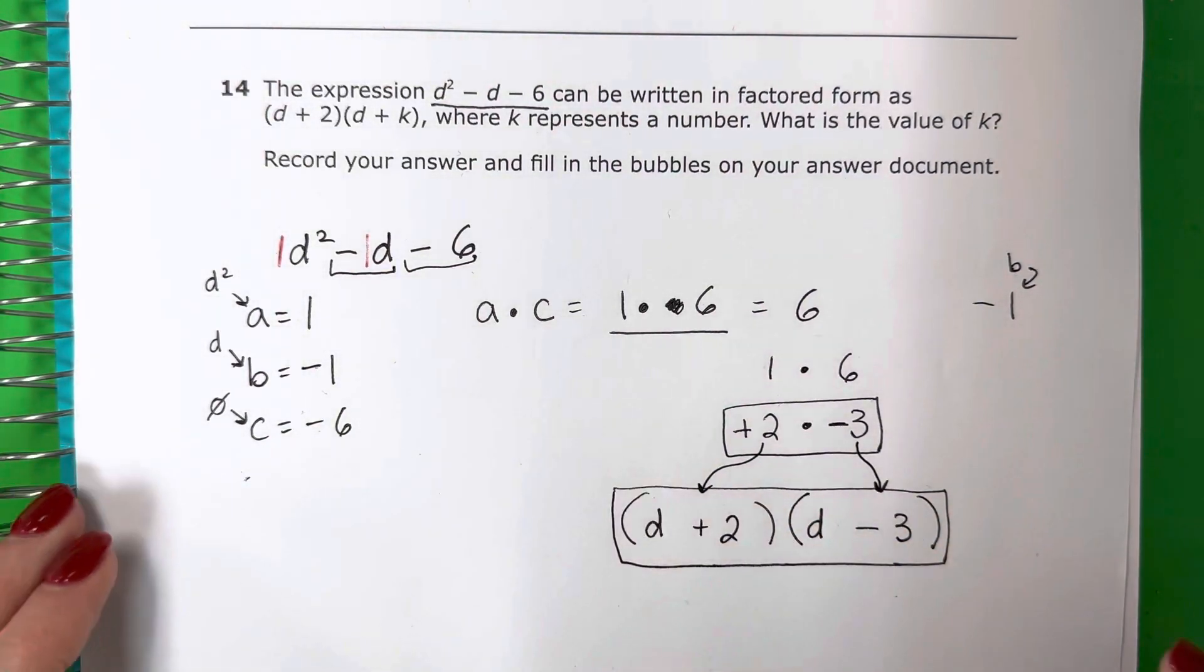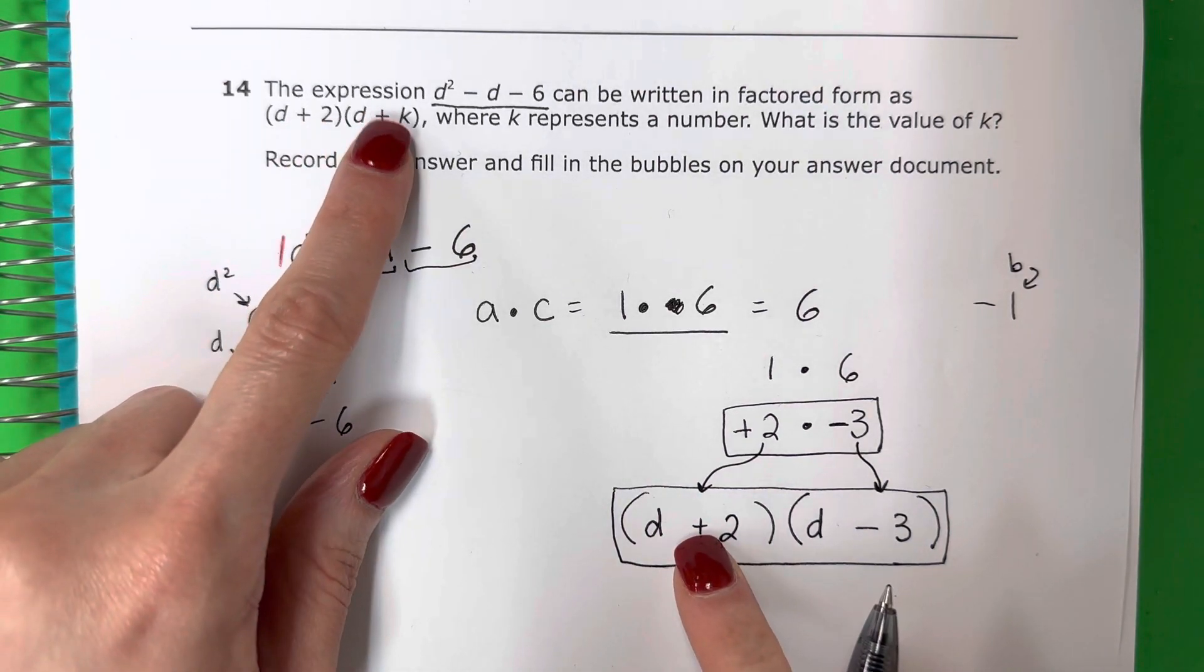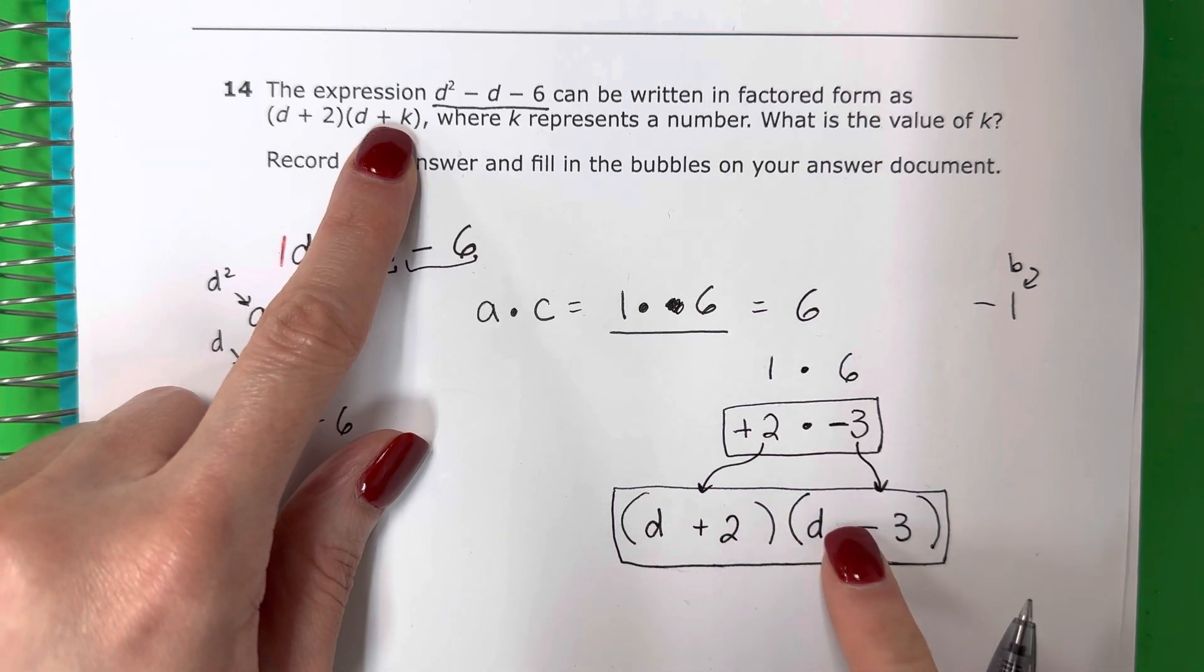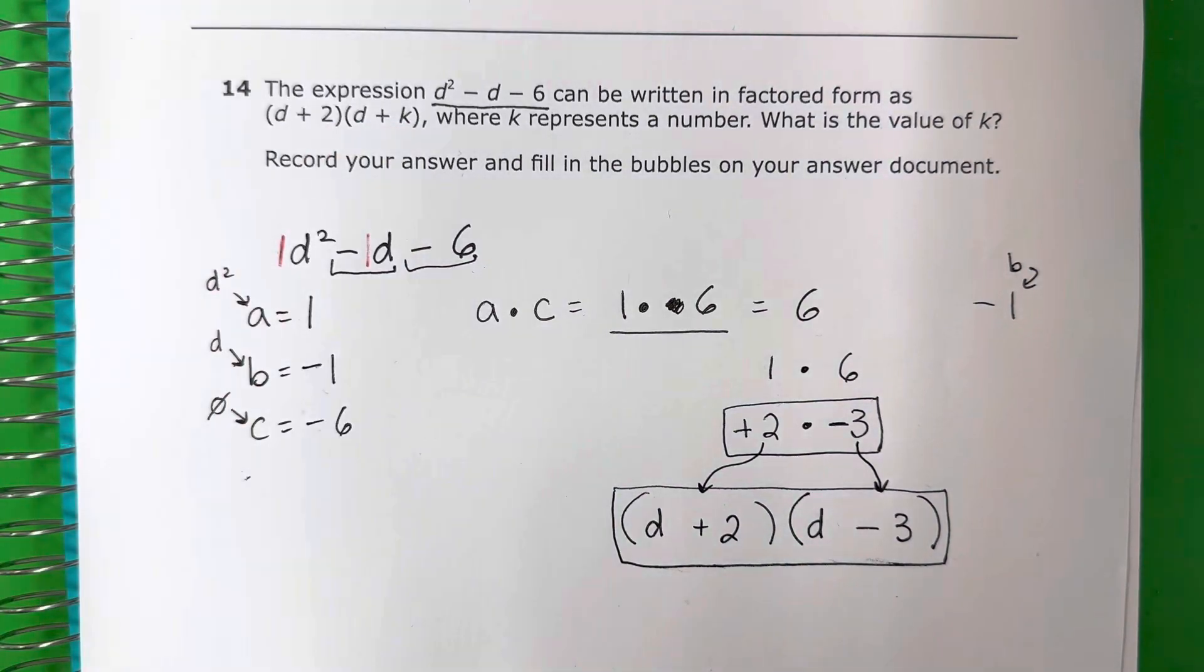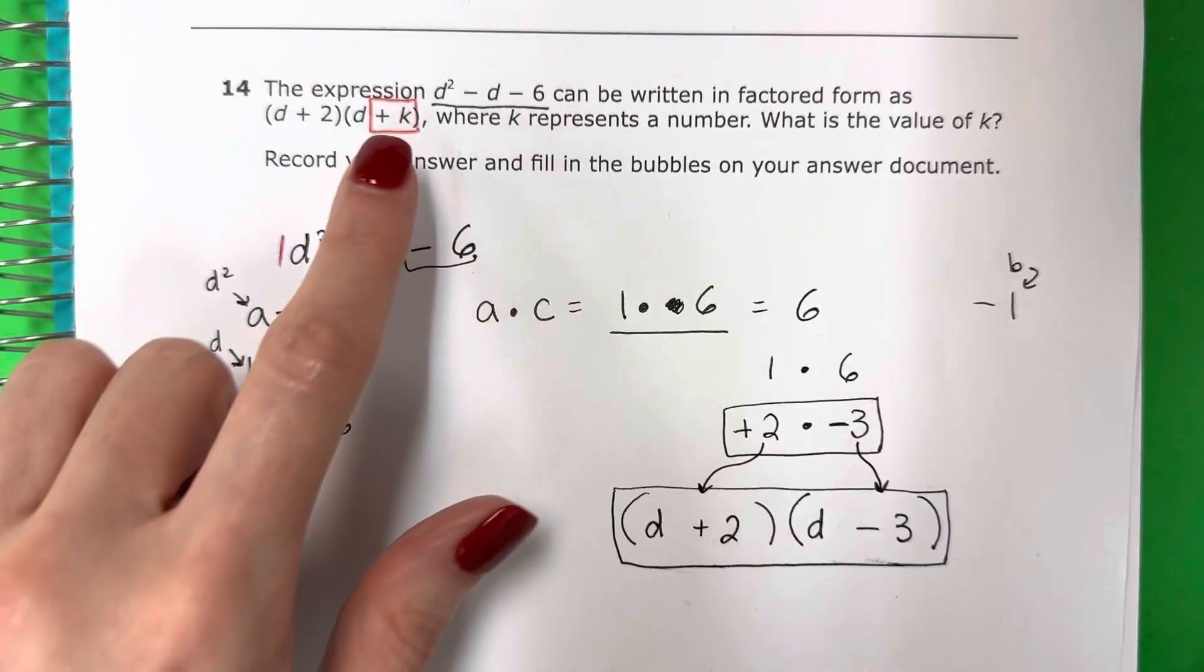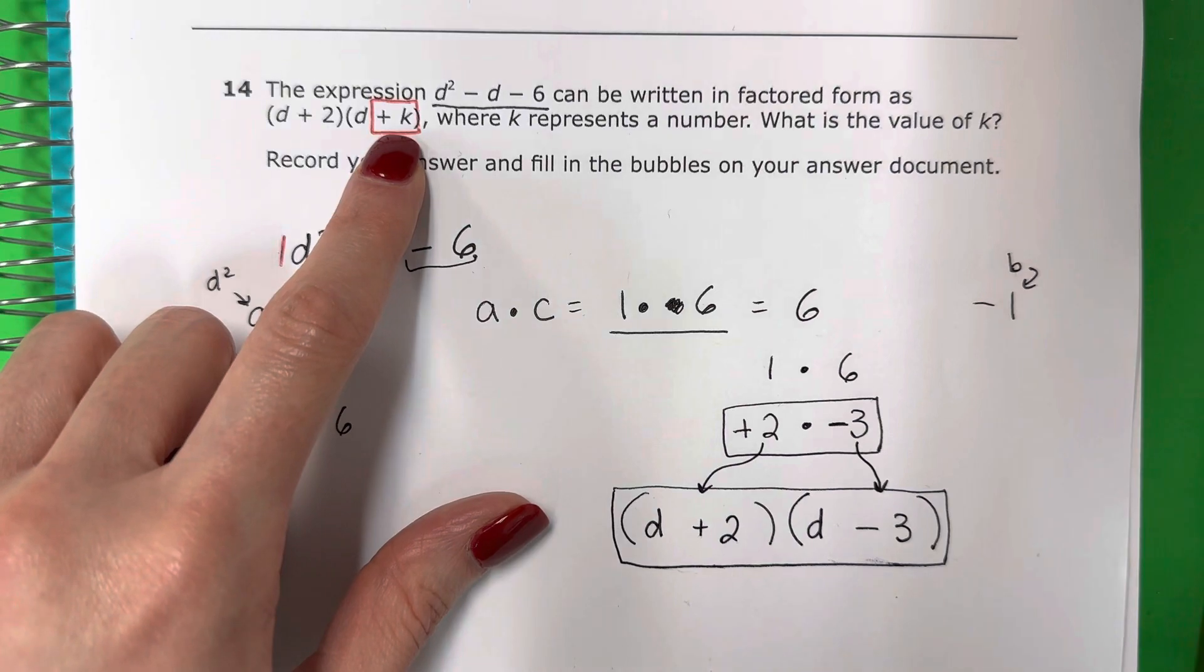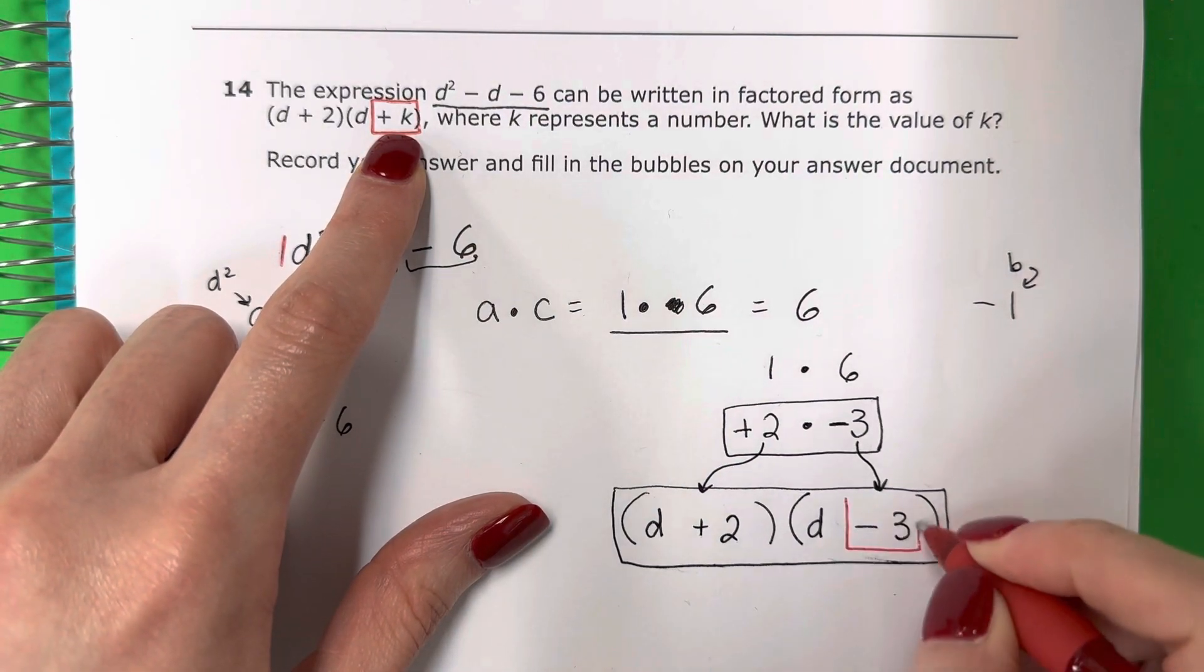But, pero, here they gave you the options. Here, D plus 2. Here, D plus K, okay? So I need to know what is K. ¿Cuál es la K? What is in that place? ¿Qué está en este lugar? Negative 3, negativo 3. So my answer is actually only negative 3. Mi respuesta es solamente negativo 3.